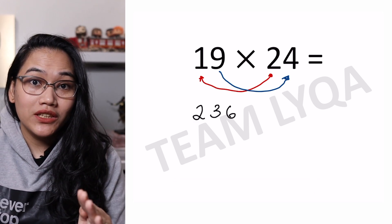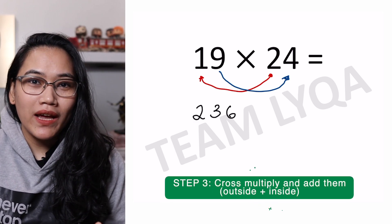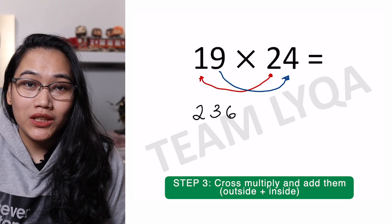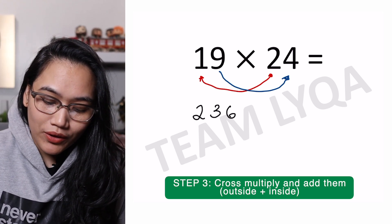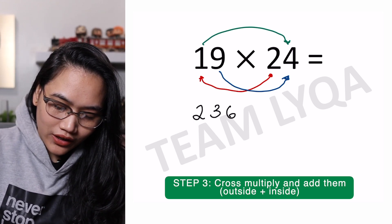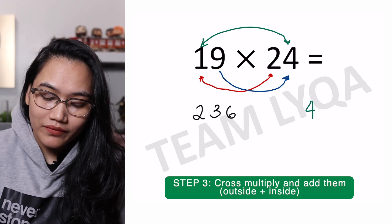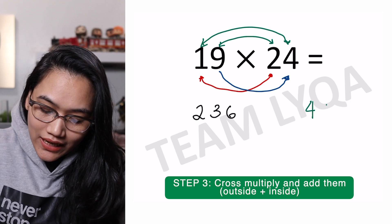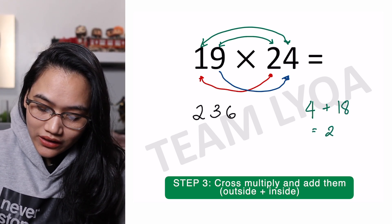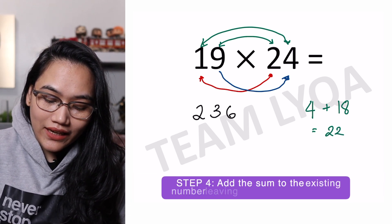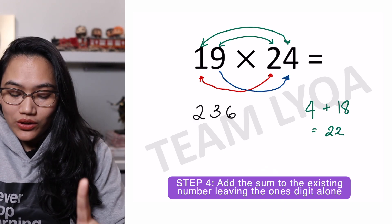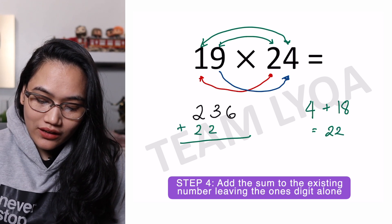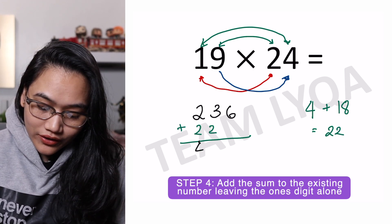Now this next step is where it gets a little bit tricky, but bear with me. What we do first is multiply the numbers on the outside — basically they cross. It's similar to the FOIL method when we talk about multiplying binomials. So outside first: 1 times 4 gives us 4. Set that aside. Then inside: 9 times 2 gives us 18. We add 4 plus 18, which is 22. Now we add 22 into our number 236 — note that the 6 remains as it is, and we add 22 into the middle, giving us 456.